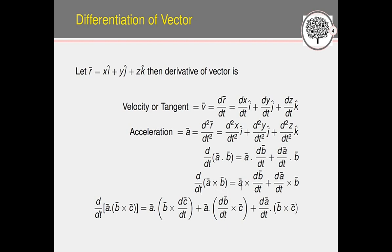The derivative of a cross product is: d/dt(a × b) = a × (db/dt) + (da/dt) × b. Note that we cannot change the order here because a × v ≠ v × a; it equals −(v × a). For the derivative of the scalar triple product: d/dt[a·(b × c)] = a·(b × dc/dt) + a·(db/dt × c) + (da/dt)·(b × c).